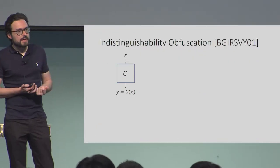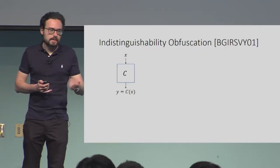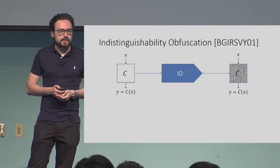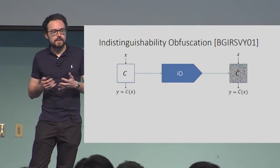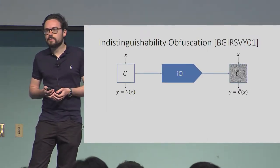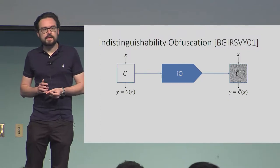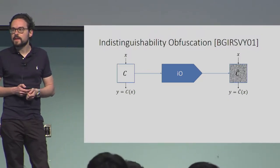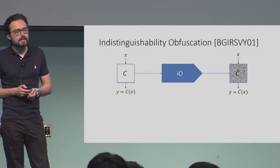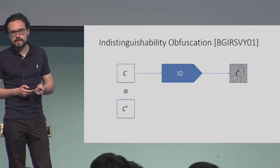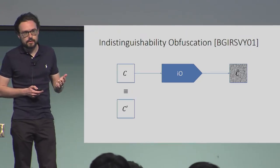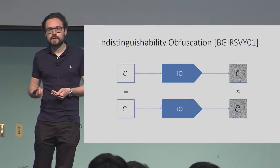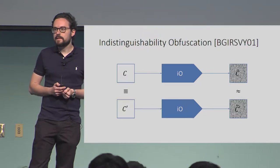Obfuscation takes a program, say represented as a circuit that computes a function, and turns it into another circuit that computes the same function, such that this circuit is unintelligible. There are different ways how this can be formalized, and the guarantee IO gives you is that if you have two circuits that compute the same function, then the obfuscations are indistinguishable.